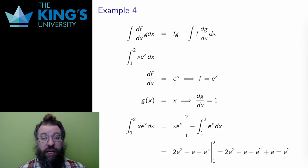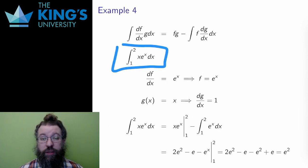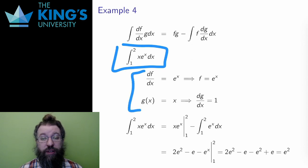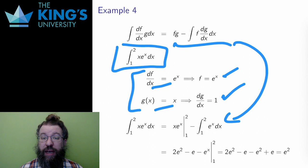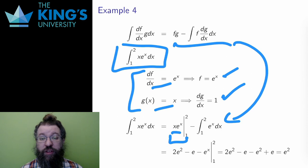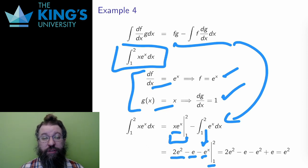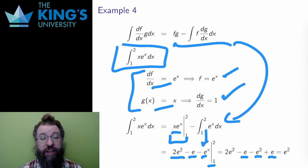I'm going to redo example 1, but now with bounds to make clear how integration by parts works for definite integrals. I do the same setup: df/dx is eˣ and g is x, so f is eˣ and dg/dx is 1. Filling in the right side, the only difference now is that I put an evaluation bar on the middle term, the fg term. I finish the eˣ integral, also evaluated from 1 to 2, and do all the evaluations: x·eˣ becomes 2e² − e, and eˣ becomes e² − e as well. All of this simplifies down to just e².